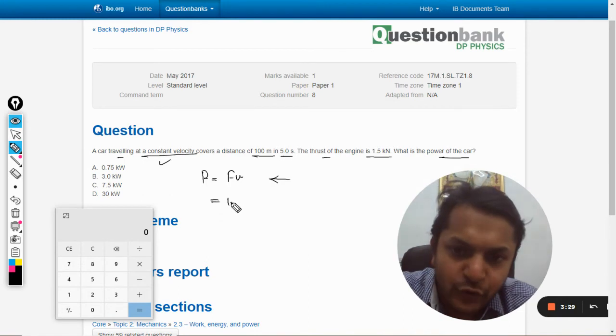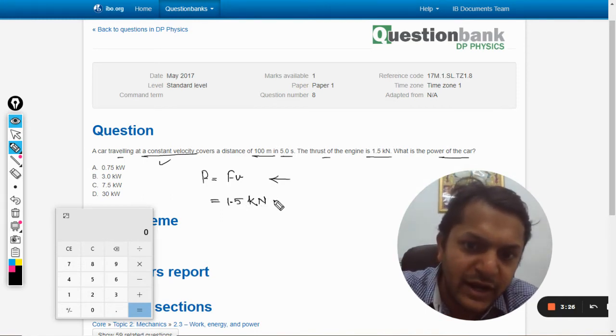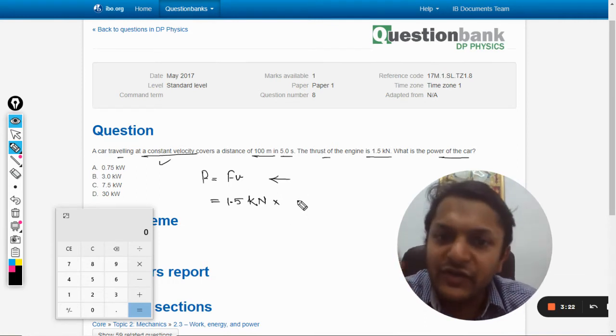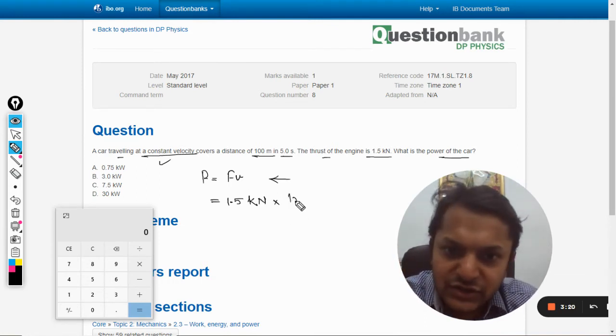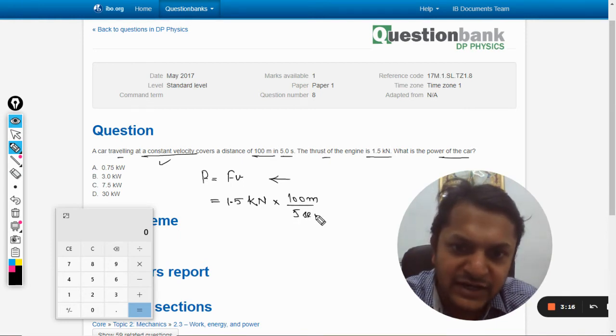So the power will be - what is the force? 1.5 kilonewtons, okay fine. I'm writing the units also. Into the velocity. How to find the velocity? Its constant velocity is simple, it is the displacement, that is 100 meters, divided by 5 seconds.